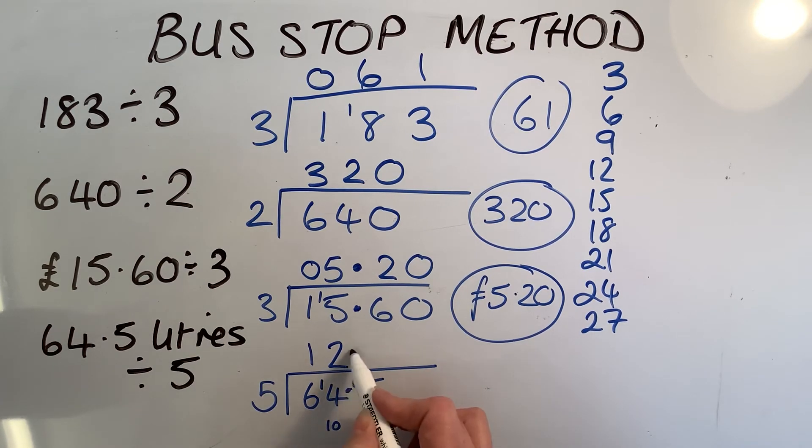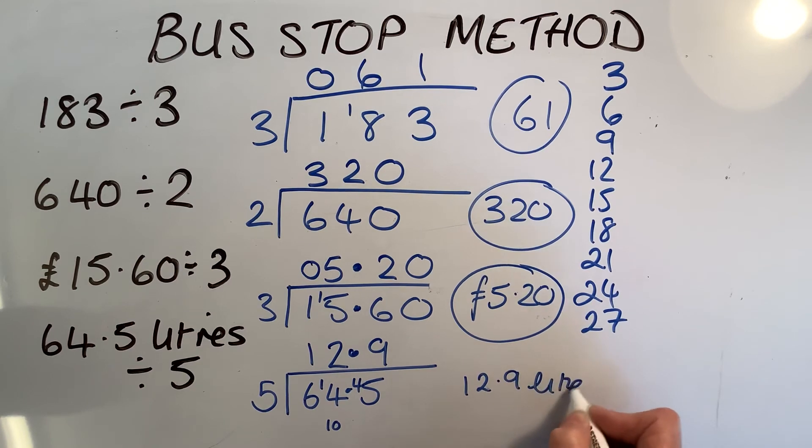Now I've got a decimal point there, so I've got to put my decimal point at the top as well. How many 5s are in 45? I know that to be 9. So this question was a litres question, so we're looking at an answer of 12.9 litres. That's what I'd put as my answer.